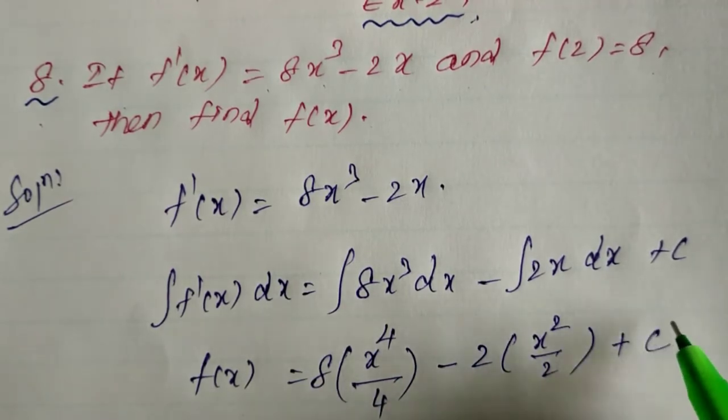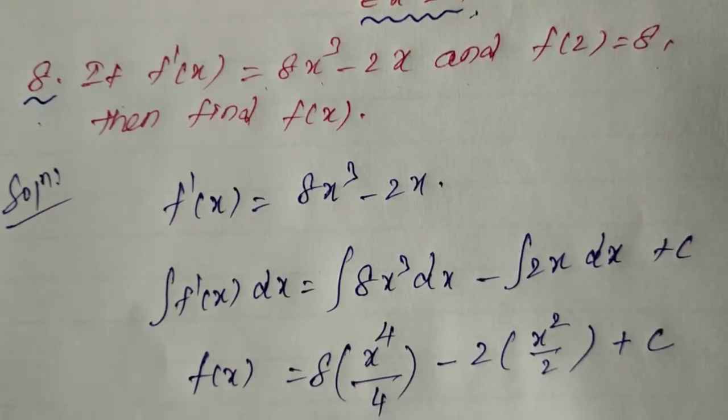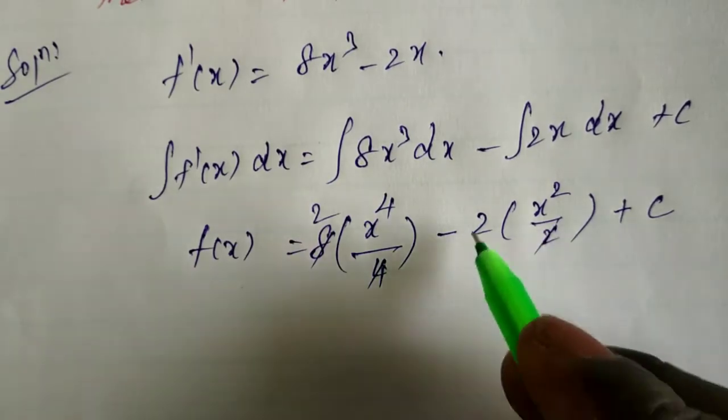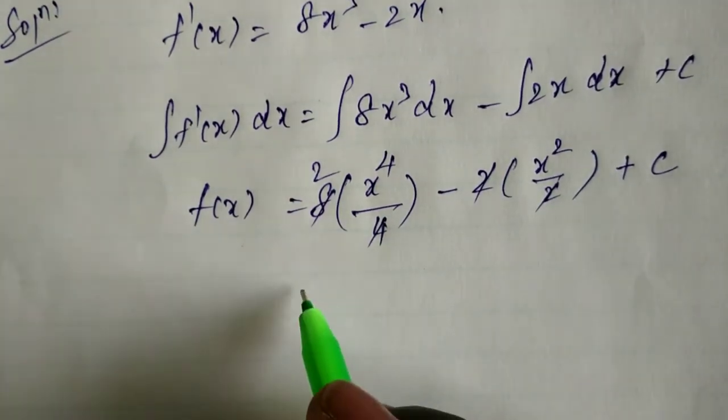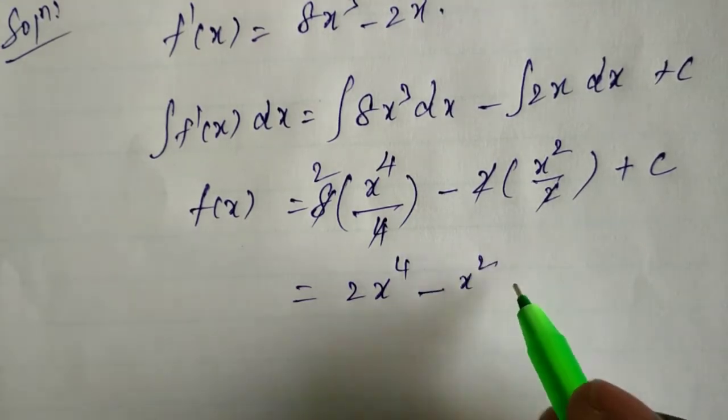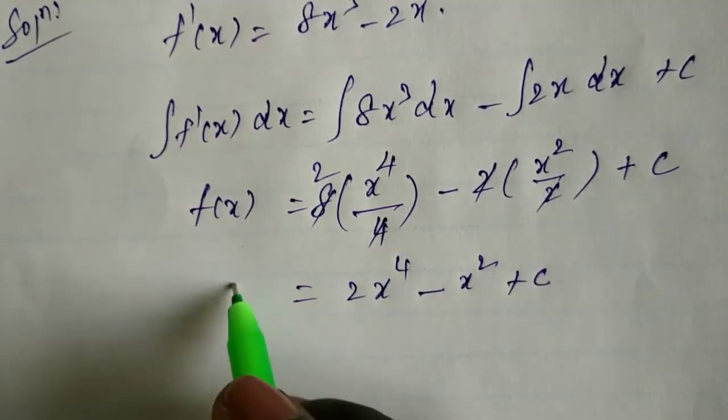Simplifying: 8/4 is 2, so we get f(x) = 2x⁴ - x² + c.